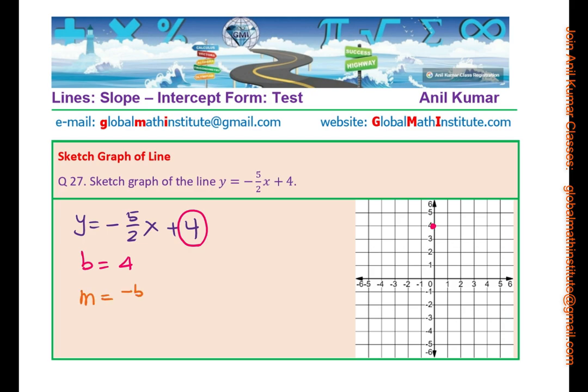And now look at the slope, which is minus 5 over 2. So you can go down 5 units and 2 right. So 1, 2, 3, 4, and 5 down and 2 units right gives us the next point. So we have three points, which can now be connected and a line can be drawn. That is how we could actually sketch the line. I hope you have understood how using these two steps, you can always sketch a line very easily. Let's take up more examples.